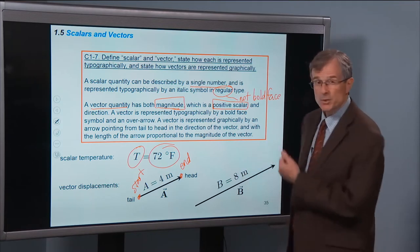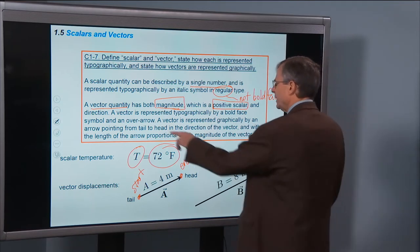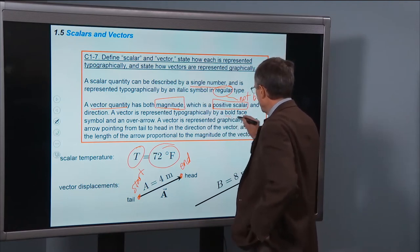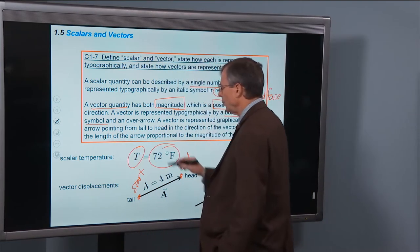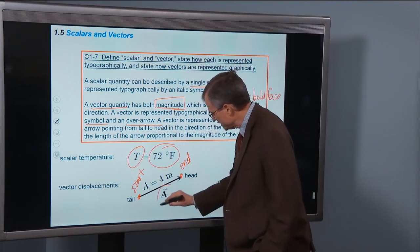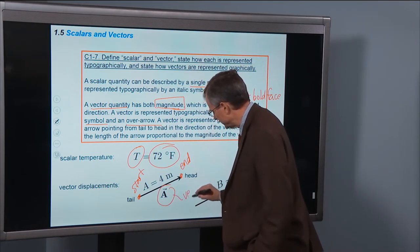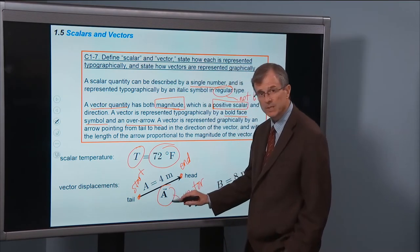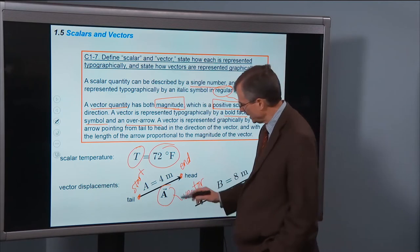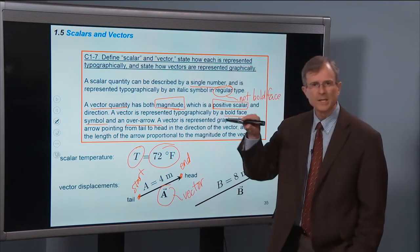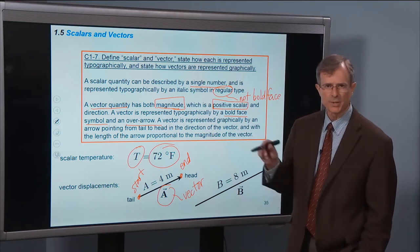So on notation now for vectors. Typographically, the vector is represented by a bold face symbol with an over arrow, an arrow over the top. So that's the notation for a vector. It's bold face as you can see, it's not italic. And it has an arrow over the top of it. That arrow reminding us that it's a vector and it has a direction as well as a magnitude.